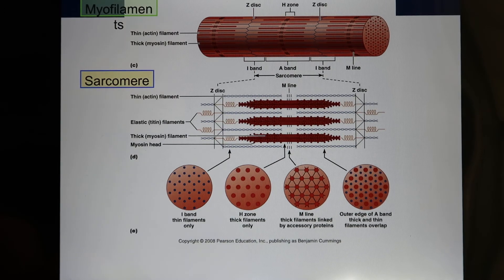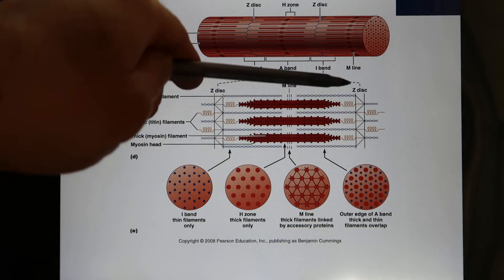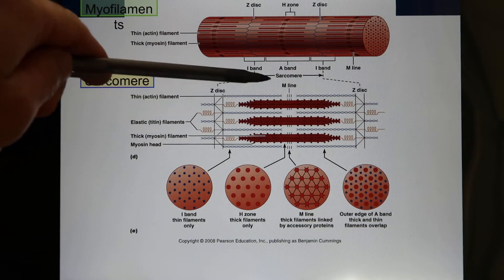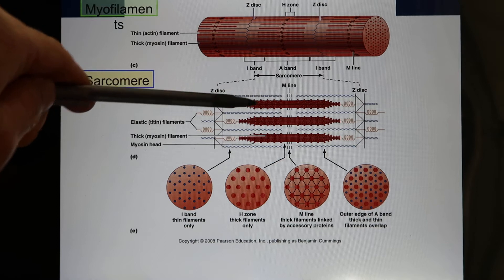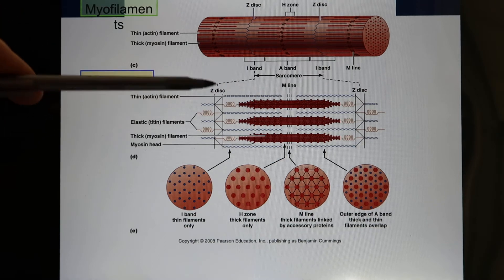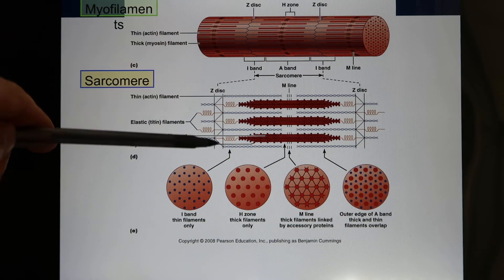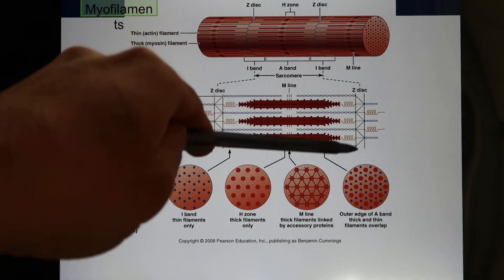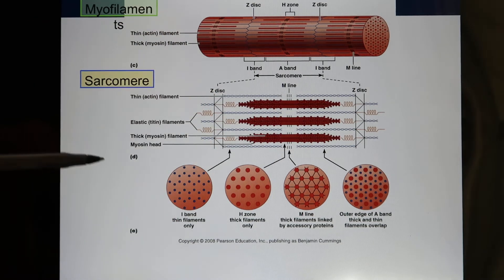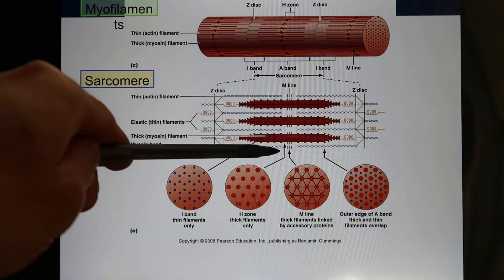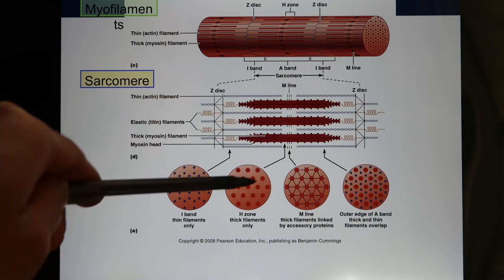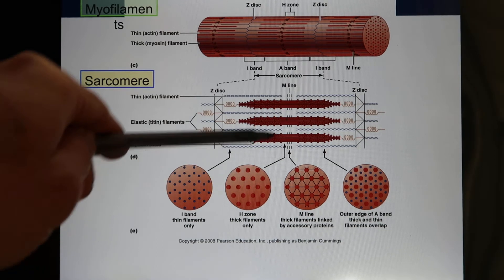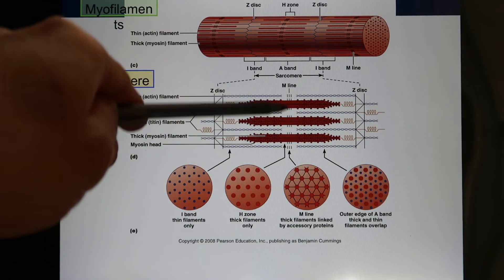This slide shows you the sarcomere structure. You have thick filaments and thin filaments — it's an overlapping model, and the sarcomere goes from one Z to another Z. In the center part there is a gap we call the H-zone, which is the region that contains only thick filaments.